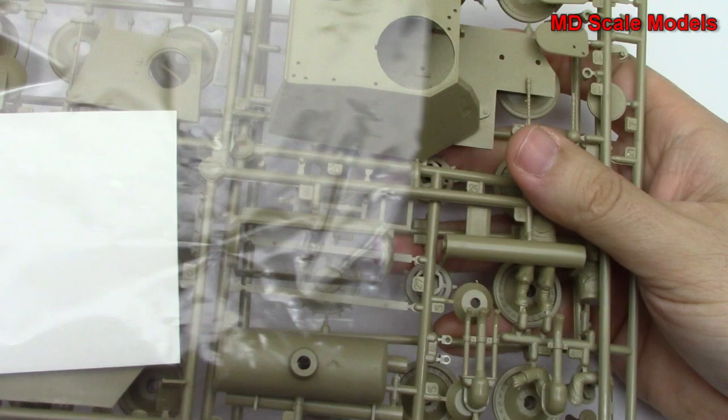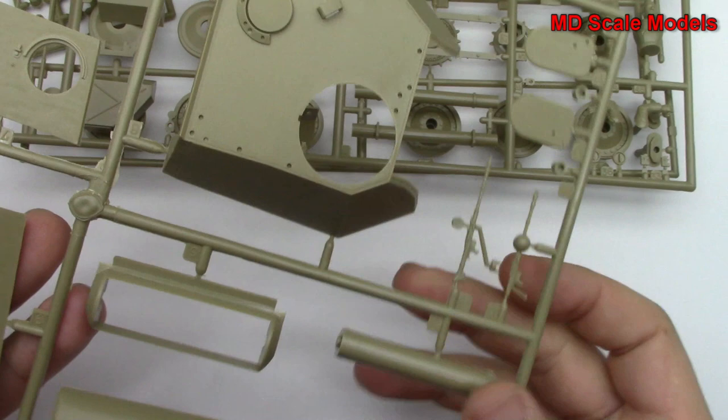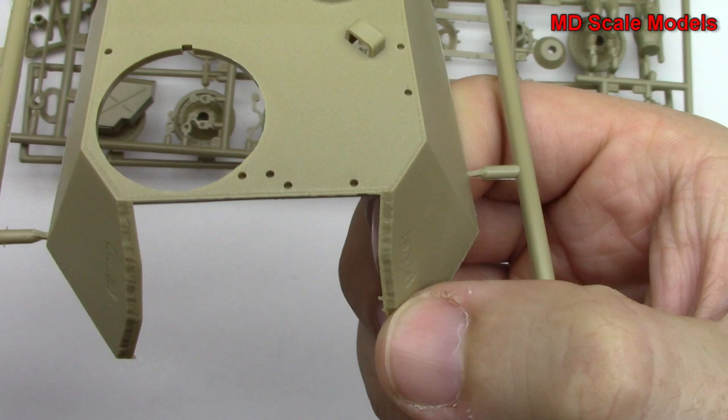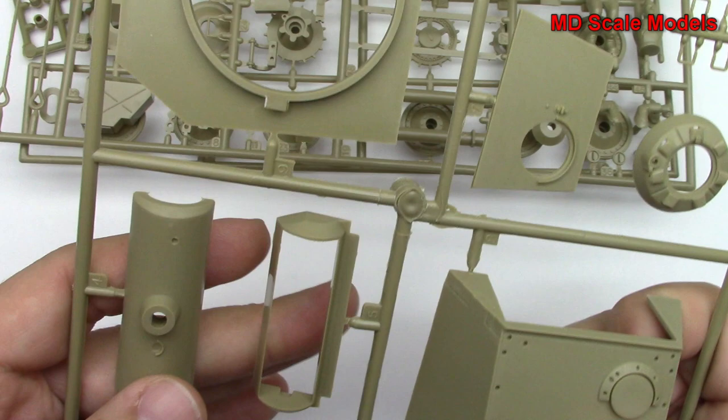Let's have a look at our sprues here. So here is the top of the turret and some nice texture details there. Here's the front for the main gun. The bottom of the turret here. Here is our main gun with some nice detail.